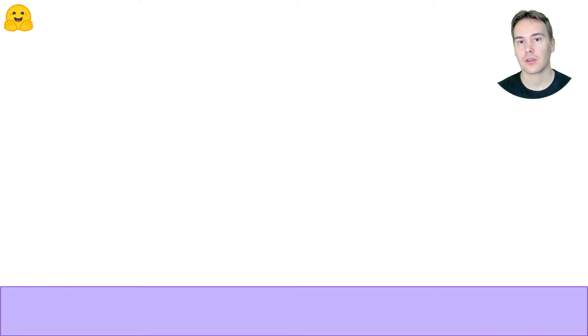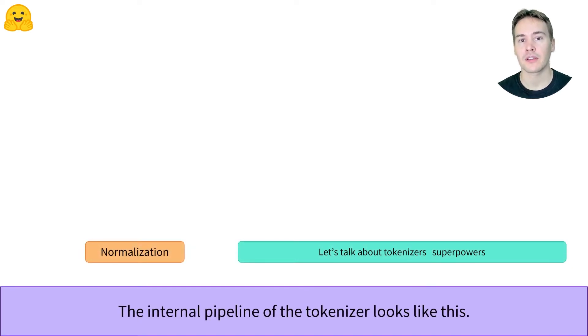To enable this, the fast tokenizers store additional information at each step of their internal pipeline.